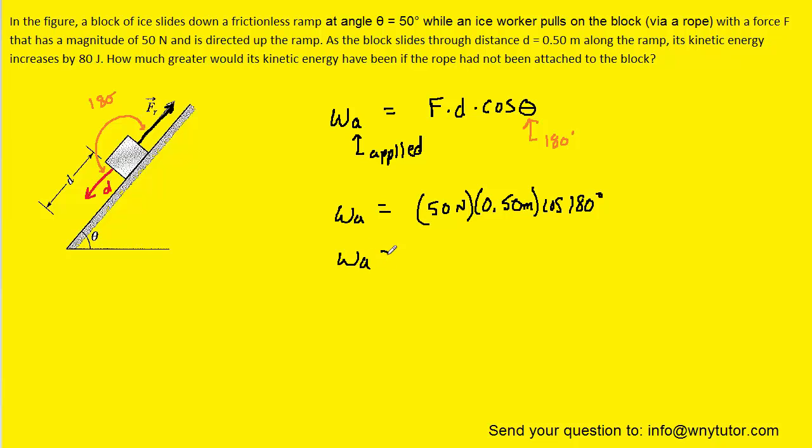Now, when we work this out, we should get negative 25 newton meters, or if we prefer, we can just say joules. So, this is the work done by the applied force as this block slides down the ramp.